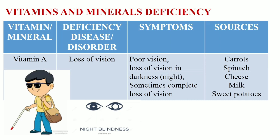Vitamins and minerals deficiency: Deficiency of vitamin A causes loss of vision — poor vision in human beings, and loss of vision in darkness, that is night blindness, which may lead to complete blindness. Such a person should intake foods such as carrots, spinach, cheese, milk and sweet potatoes in their diet, as they are good sources of vitamin A.